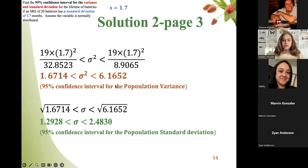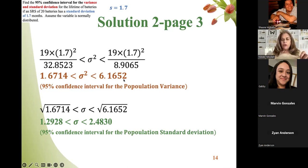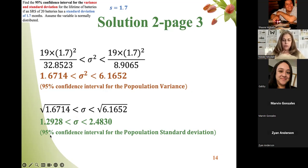The meaning of a 95% confidence interval: we are 95% sure the actual value of sigma-square is between these two numbers. There is a 5% chance the actual value is not within these two numbers. Similarly, we are 95% sure the actual value of sigma is between 1.2928 and 2.4830, with a 5% chance it is not.